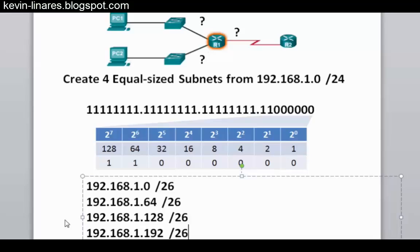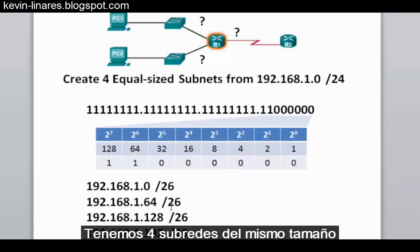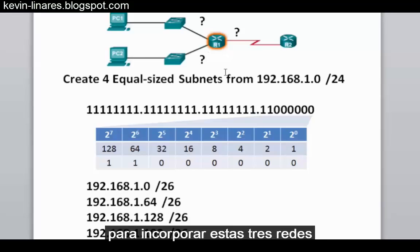We now have four equal-sized subnets, and we can use any of these subnets to accommodate the three networks in the diagram.